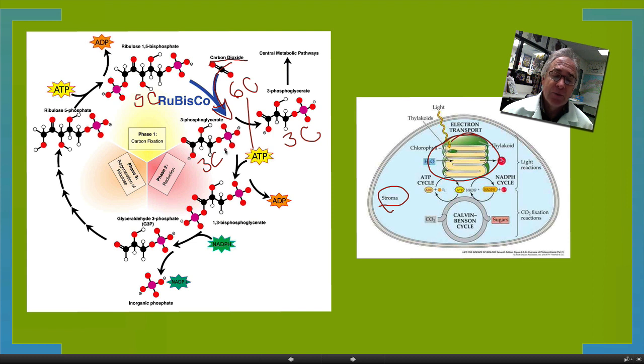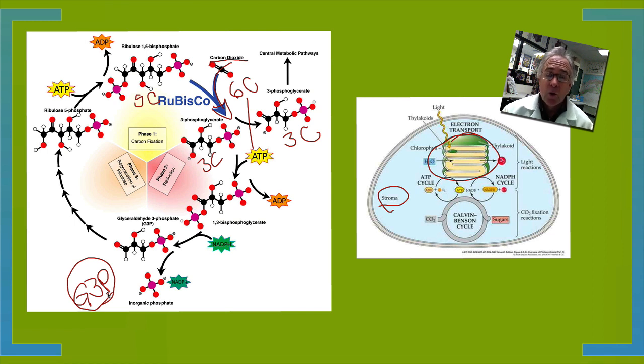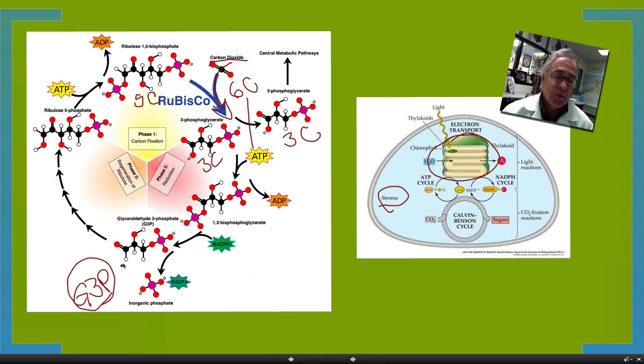Then ATP comes along and weaves together all these carbon-chained molecules being made. This G3P, a 3-carbon chain, really helps determine what kind of sugar needs to be made, whether glucose, lactose, or some other sugar. That's what is made - G3P.